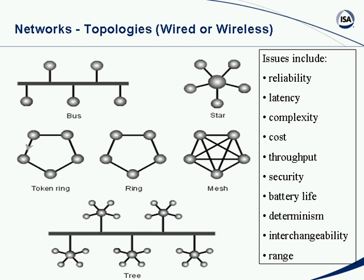All these topologies have an impact on reliability — the star network has a single point of failure. They also have an impact on latency: in a mesh network it can be difficult to trace how long it takes a signal to get through because you don't know how complex the routing algorithm is. Mesh can get very complex very fast. They also affect cost, especially in wired networks, because of the wire and number of interfaces necessary.